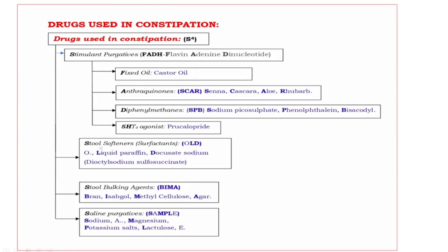Next, second one, stool softeners. These are also known as surfactants. The drugs are BOLD. Bold letters are LD. L: Liquid paraffin. D: Docusate sodium. It is also known as dioctyl sodium sulfosuccinate.